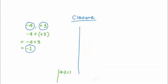Now let's look at subtraction. Taking the same integers: minus 4 and minus 6. Minus 4 minus minus 6 — minus 4 stays as it is. Minus minus: same signs, so the resultant sign is going to be plus.